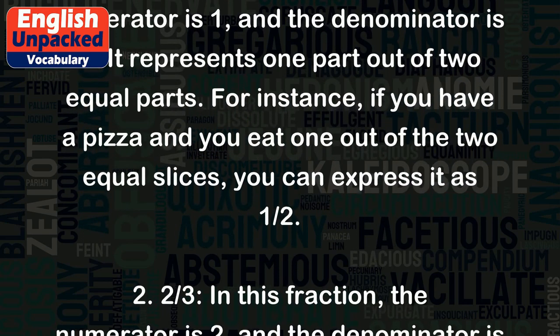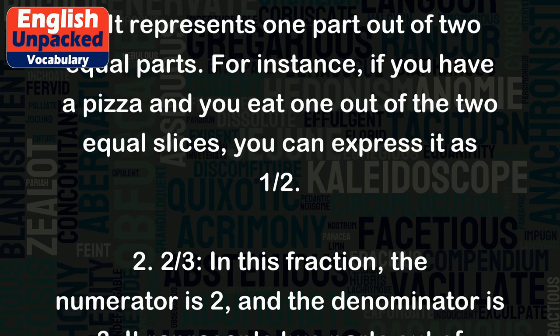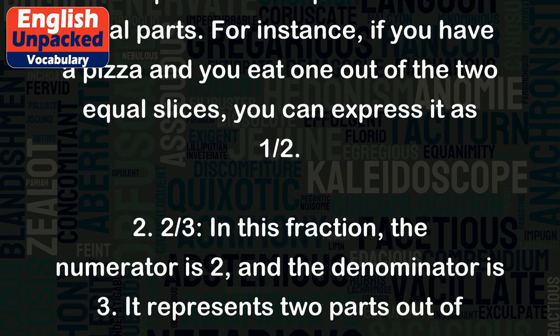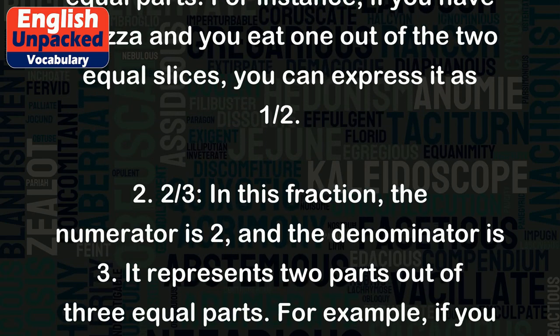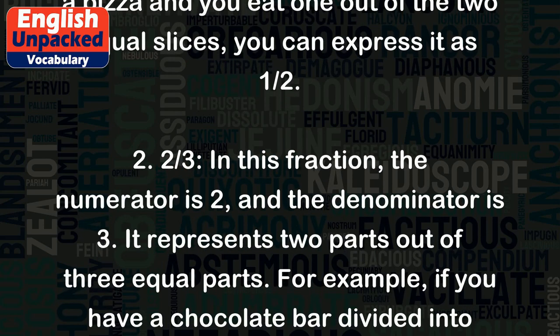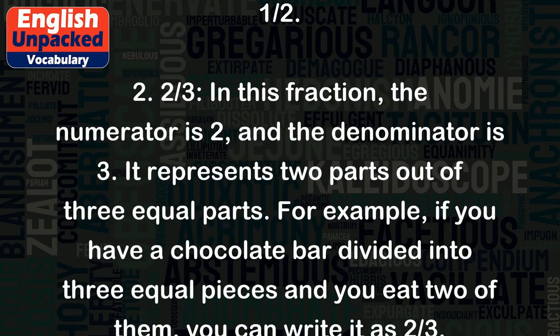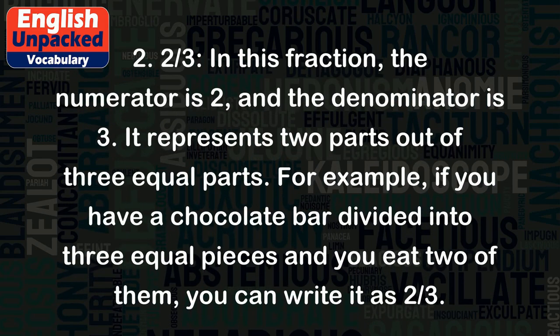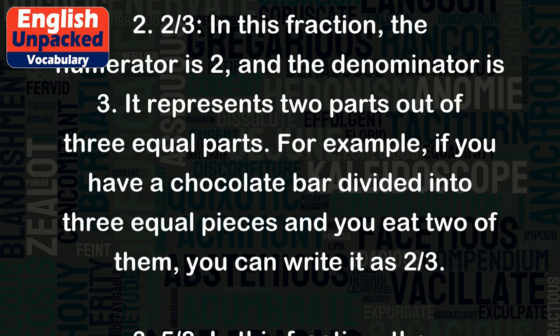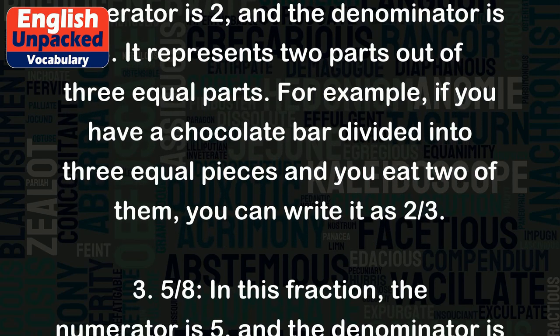2. Two thirds. In this fraction, the numerator is 2 and the denominator is 3. It represents 2 parts out of 3 equal parts. For example, if you have a chocolate bar divided into 3 equal pieces and you eat 2 of them, you can write it as 2 thirds.